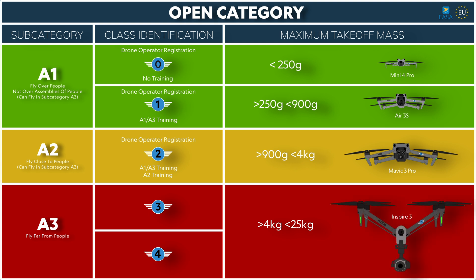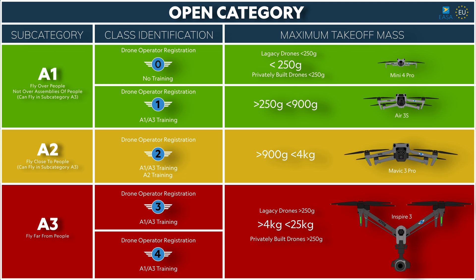The Inspire 3 is a 4.3 kg drone, so its class identification is C3. That requires registering as a drone operator and completing online training for the A1/A3 subcategory. For older drones made before January 2024 without class identification: those below 250 grams — including privately built drones below 250 grams — fall into subcategory A1 under the same regulations as C0 drones. Everything above 250 grams falls into subcategory A3, the same as C3 or C4 drones.